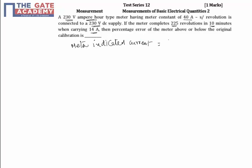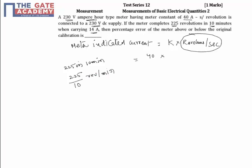The meter indicated current is equal to meter constant times revolutions per second. The meter constant is 40 ampere-seconds, and we have 225 revolutions in 10 minutes. Converting to revolutions per second: 225 divided by 10 gives revolutions per minute, then divided by 60 for revolutions per second.